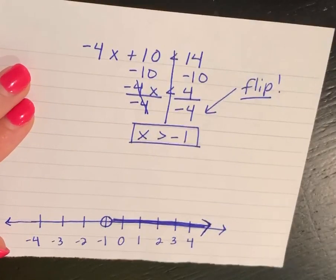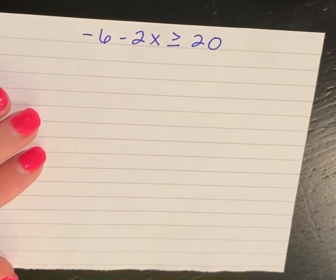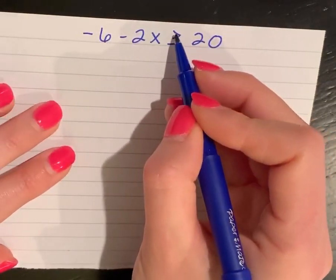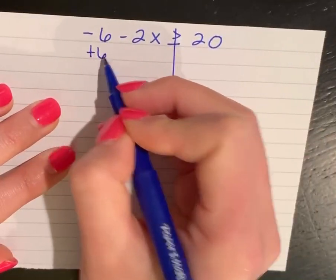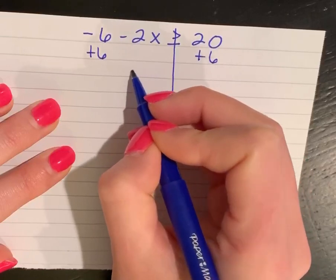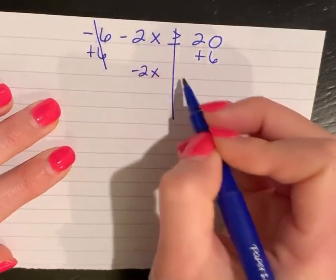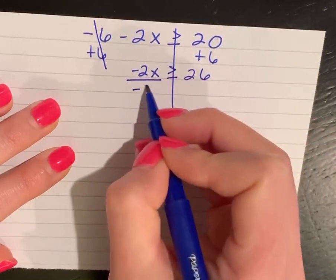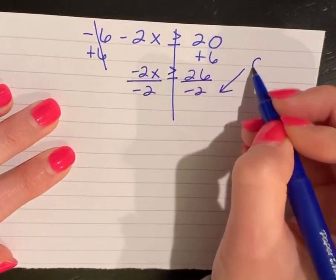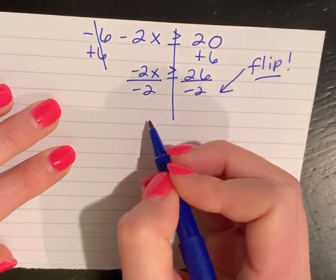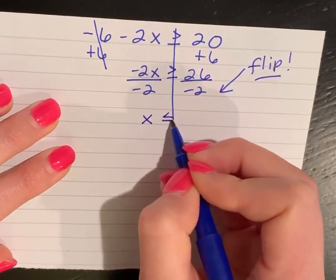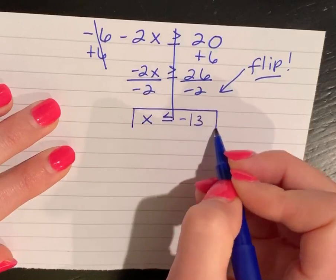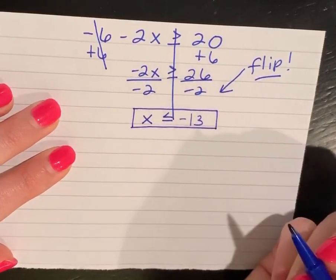The next one: negative 6 minus 2x is greater than or equal to 20. I'm going to solve it just like a regular two-step equation. I get negative 2x is less than or equal to 26. Notice I'm dividing by a negative, so I'm going to flip my inequality sign from a greater than to a less than. So I get x is less than or equal to negative 13.